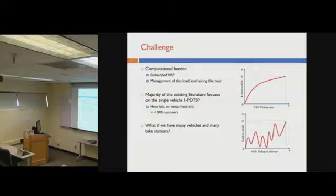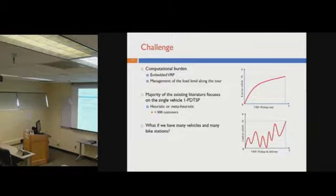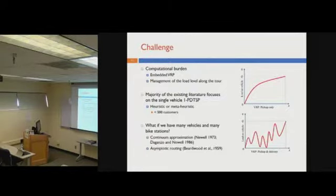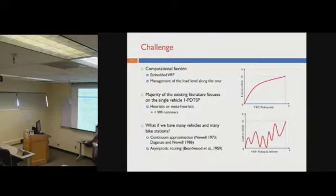But what if the number of customers is much larger — for example, in dockless systems where the number of bike locations is enormous? In that case, using heuristic or meta-heuristic algorithms would make it very difficult to get a reasonable solution in a short time. So here we propose to employ the so-called continuum approximation (CA) method, trying to model the pick-up and delivery process in an asymptotic way, which reduces the difficulty of the model so we can solve the problem more efficiently.